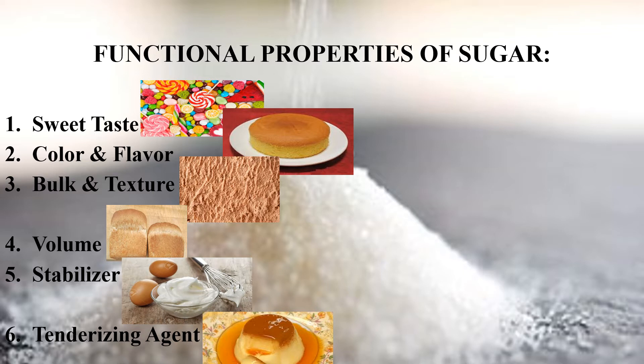Sugar can affect the weight and volume of the food. Volume of all bakery products can be affected in various ways. Sugar increases the volume of bread because the yeast breaks down part of the sugar and transforms it into various components that also include carbon dioxide. In the presence of sugar, yeast works better to give volume to baked products.